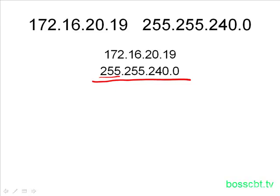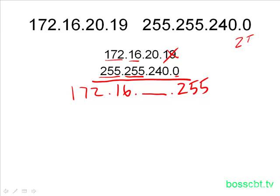Looking at the first octet, we know what to do — copy 172. Second octet, same thing. Now we get to the funny octet in the third position, so we skip it for now and put a placeholder. In the last octet, we have zero, so we write down 255. Now applying the formula: 256 minus 240 gives us 16 — that's our funny multiplier.